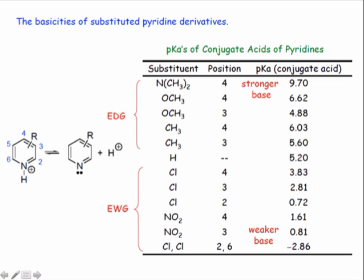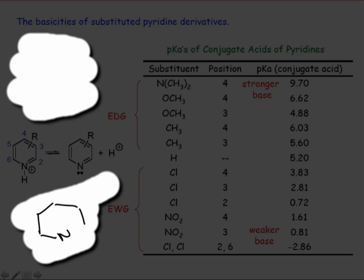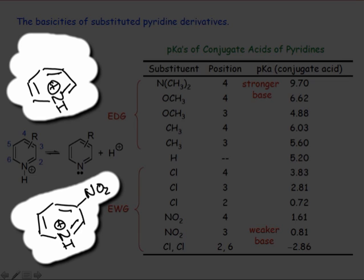Indeed, this table shows us that, as we would expect, electron-donating groups such as dimethylamino and methoxy increase the basicity of pyridine's lone pair, while electron-withdrawing groups, such as nitro, render the lone pair less basic. Try drawing resonance structures of the conjugate acids 4-aminopyridinium and 3-nitropyridinium to rationalize their pKa difference.